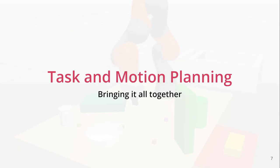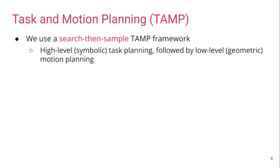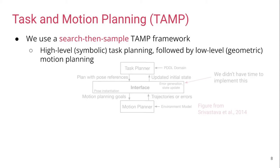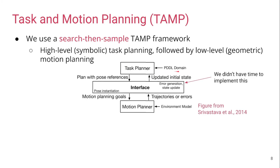Now let's bring these controllers together using task and motion planning. We use a search-for-example TAMP framework, which consists of high-level symbolic task planning followed by low-level geometric motion planning. Given a PDDL domain problem, we feed it to our AI planner, which gives us a high-level plan. Using our interface, we call a motion planner in order to find a low-level satisfying plan. If the plan is successful, then we execute it. Otherwise, we add some additional constraints and feed it back to our AI planner to find a new plan.